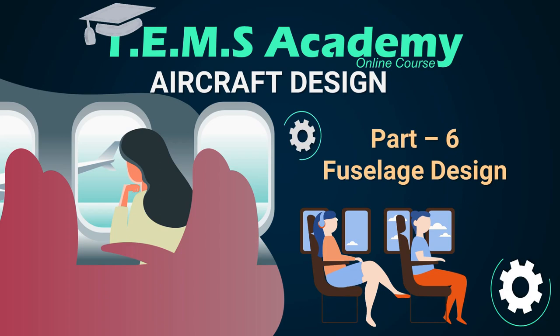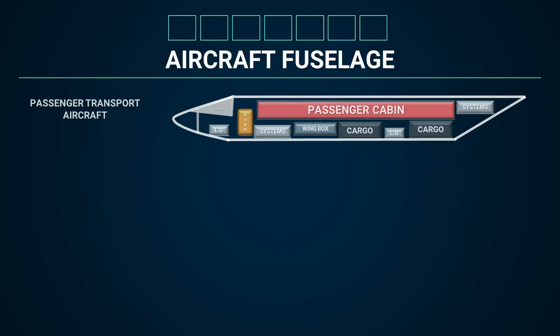After the wing, the fuselage is the second most important aircraft component, which helps to accommodate crew, passenger payload, cargo, packages, landing gear, etc.